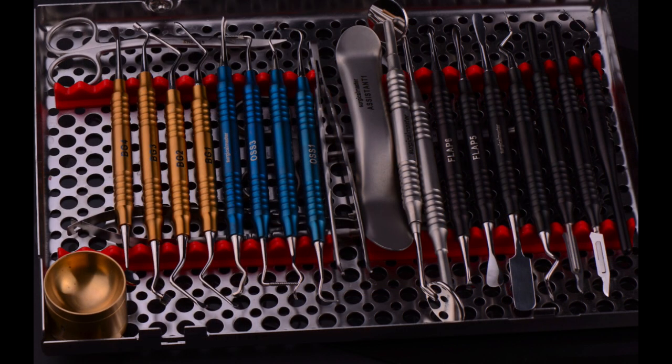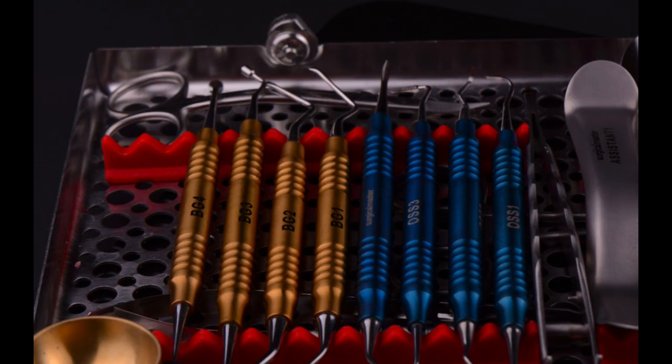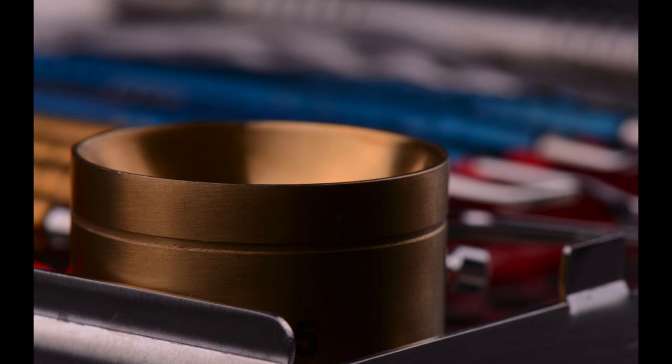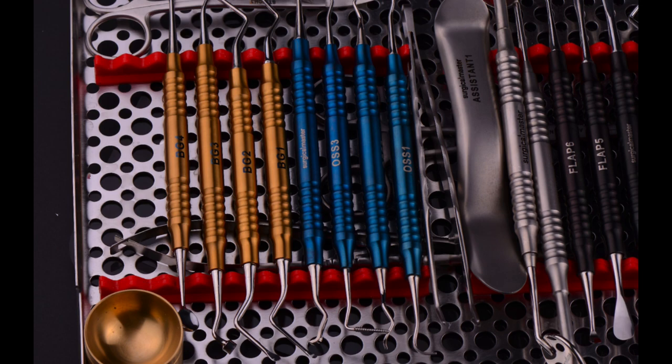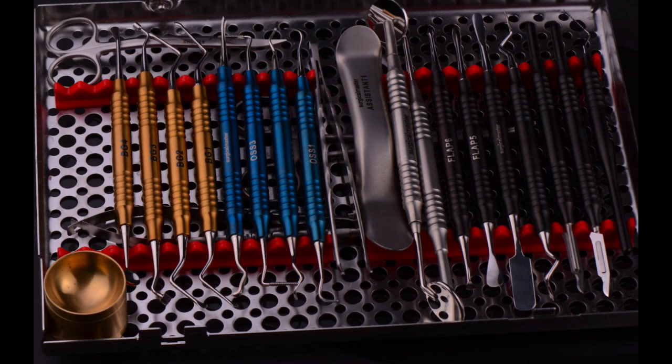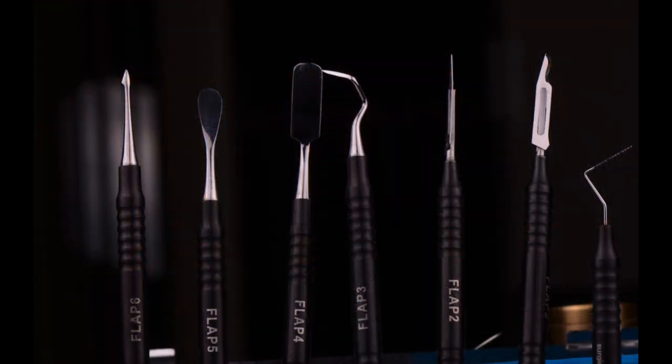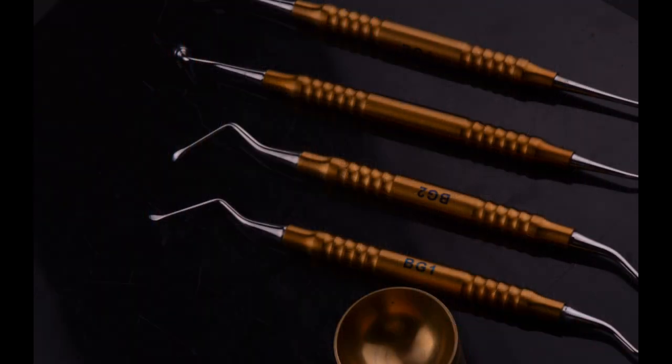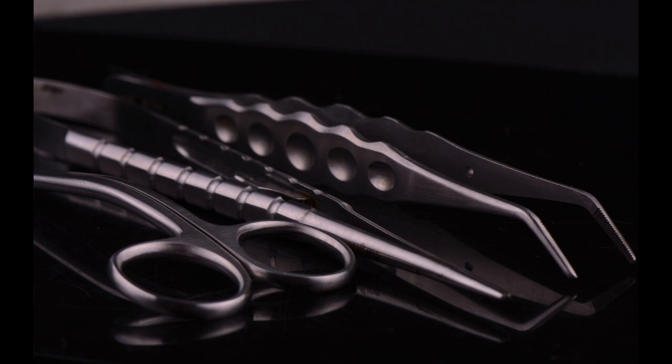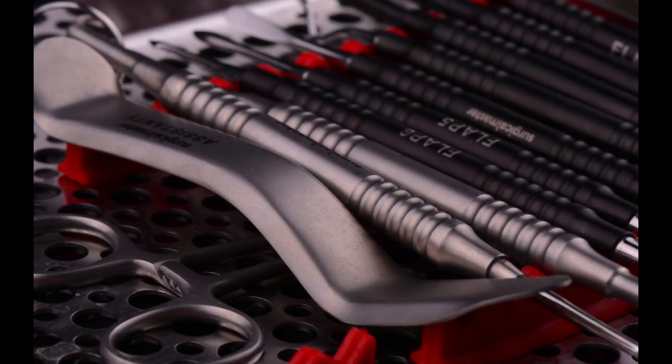In the past videos, I talked to you about the vision for a basic surgical kit. It's now available from Surgical Master. It's called the Intuitive Surgical Kit. It has all five important groups of instruments: the flap instruments, the osseous instruments, bone grafting instruments, suturing instruments, and of course, our assistant instruments.